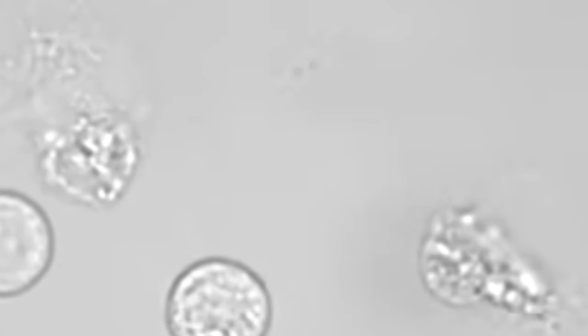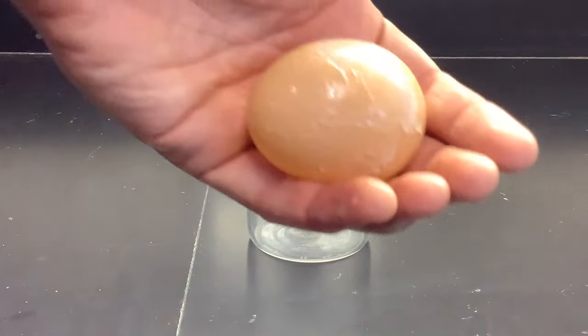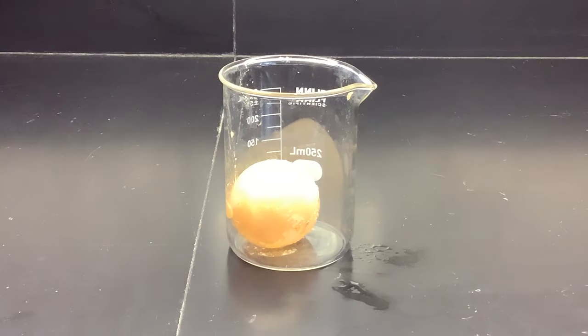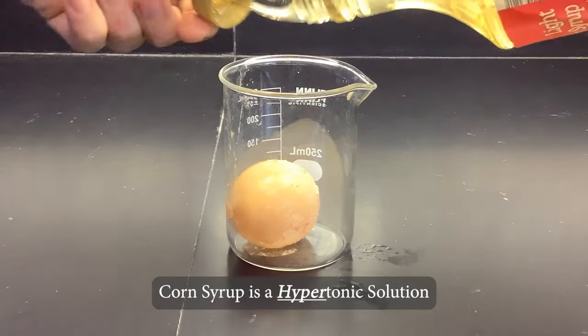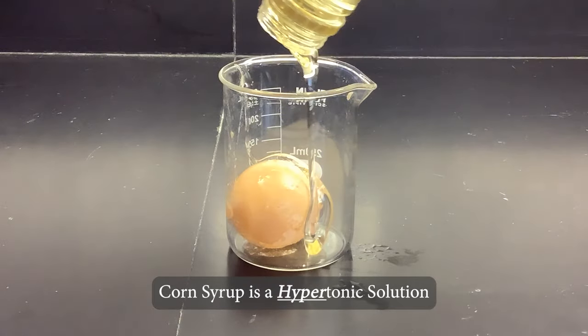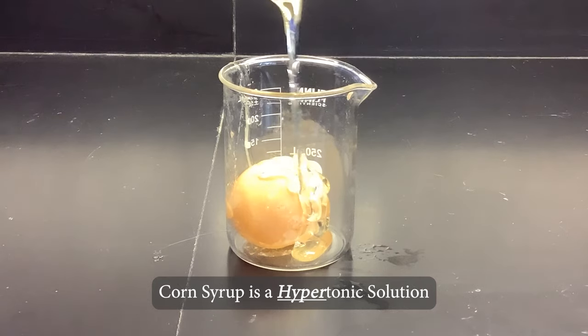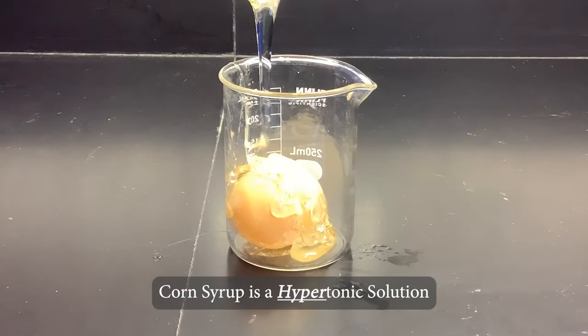Now, let's look at the opposite effect. Here's an egg that has had its shell removed by being soaked in vinegar overnight. We are going to soak it in corn syrup, a hypertonic solution. Look at how thick the corn syrup is. That is because it is very concentrated with sugar, a solute.